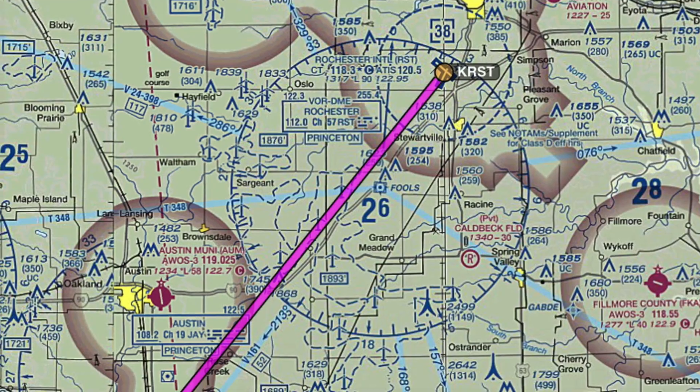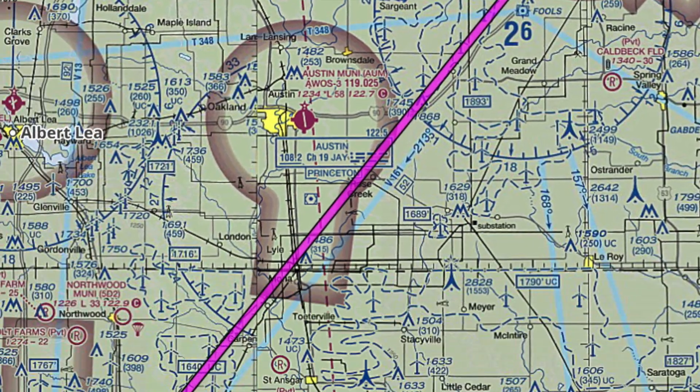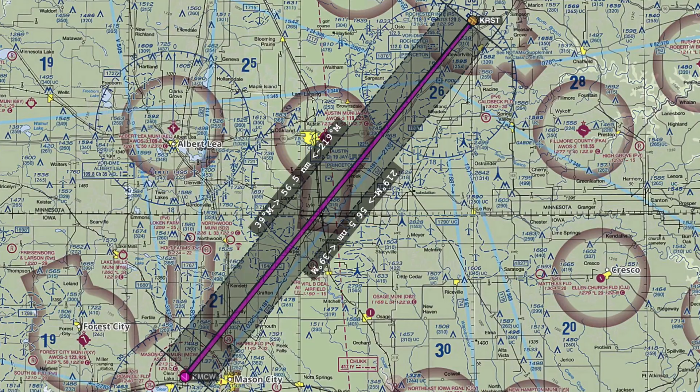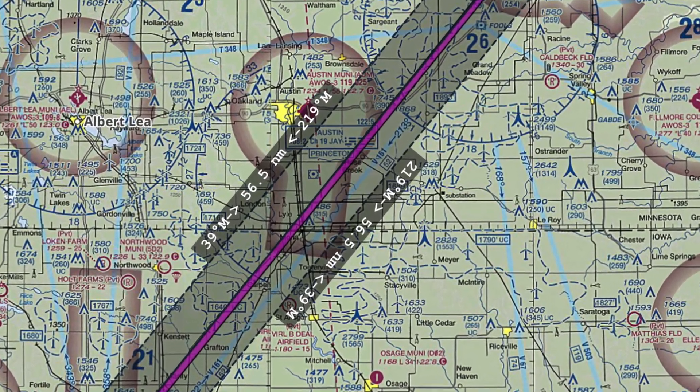Step one: identify the straight line route between your departure airport and your destination. You can't always use this route, but the fewer heading changes you have, the easier it'll be to plan. So let's plot a straight line from KRST to KMCW, and doing that, we see that our ground track or true course will be 219 degrees. Well, that was easy.